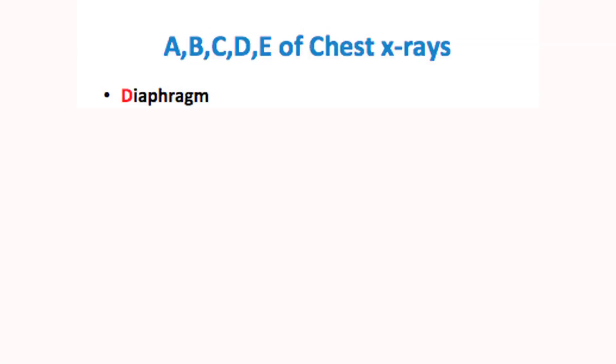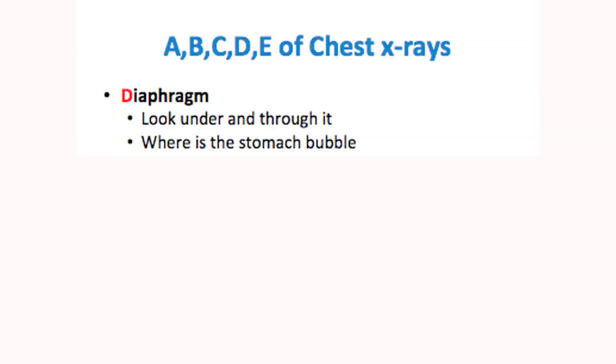D stands for diaphragm. Look above it, look at it, and look underneath it. Remember, the right diaphragm is always going to be more elevated than the left because we have the liver underneath the right diaphragm. You want to know if the lung markings can be seen through the diaphragm, and whether that stomach bubble is on the left side. There are certain diseases such as Kartagener's syndrome — also known as immotile cilia syndrome — where you could have dextrocardia and situs inversus, with internal organs on the opposite side. So make sure that stomach bubble is on the left.